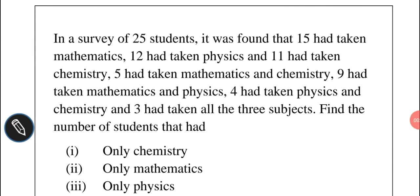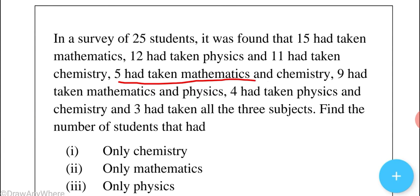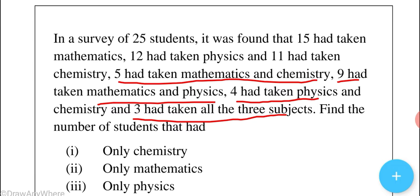In a survey of 25 students, it was found that 15 had taken mathematics, 12 had taken physics, and 11 had taken chemistry. 5 had taken mathematics and chemistry, 9 had taken mathematics and physics, 4 had taken physics and chemistry, and 3 had taken all 3 subjects.